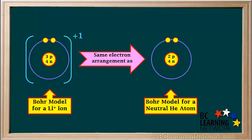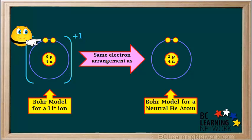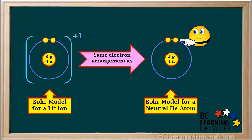Notice the Bohr model for a Li⁺ ion has the same electron arrangement as a model for a neutral atom of the noble gas helium. When elements in groups 1 to 2 and groups 13 to 17 on the periodic table form ions, they do so in order to achieve the stable electron arrangement of a noble gas. We can easily tell the difference between a lithium plus ion and a neutral helium atom, because the lithium plus ion has three protons and two electrons, whereas the neutral helium atom has two protons and two electrons.